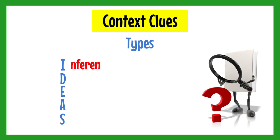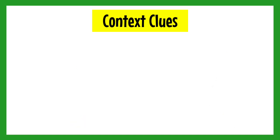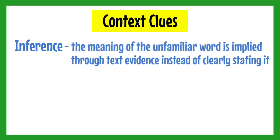I stands for Inference or General Context, D for Definition, E for Example, A for Antonym, and S for Synonym. Let us have inference first. When you say inference, the meaning of the unfamiliar word is implied through text evidence instead of clearly stating it in the sentence.